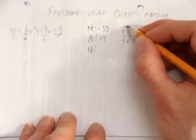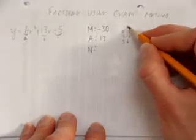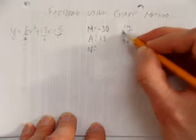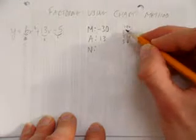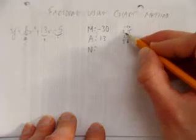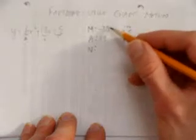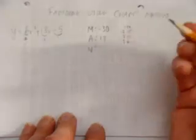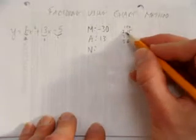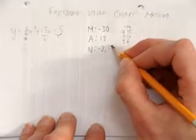How about 1 and negative 30? That works for multiplying, but 1 plus negative 30 doesn't add to 13. How about 2? Let's try making that negative. Negative 2 and 15. They multiply to negative 30. And look, perfect. Negative 2 plus 15 gives 13. I've got my two numbers.